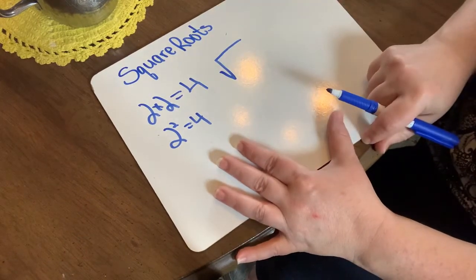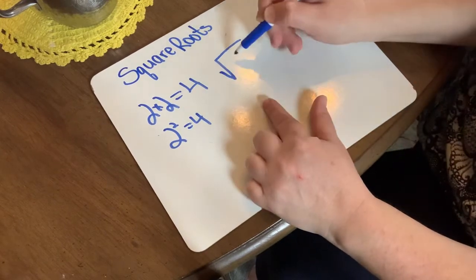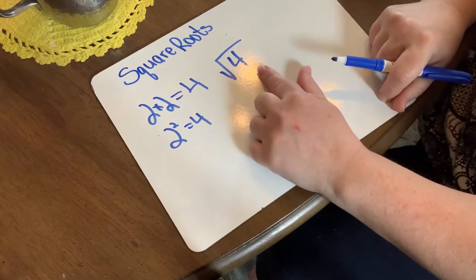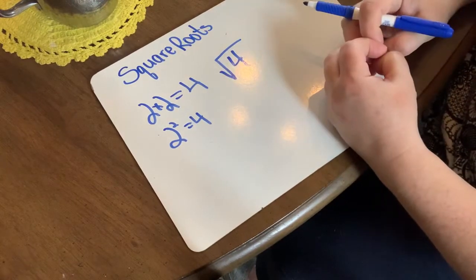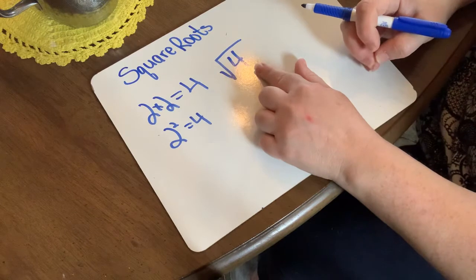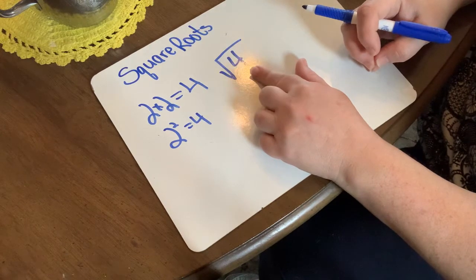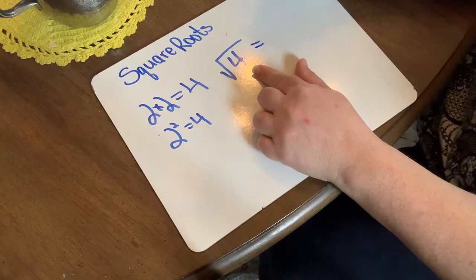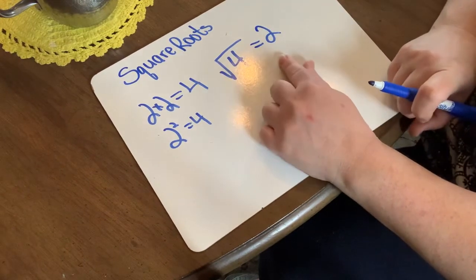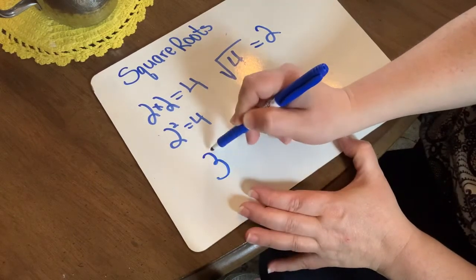Now I want to work backwards. My root sign looks like a division sign with a check mark in front of it. I want to find the square root of 4. A square root is two factors that are the same number, and I know that two factors that are the same number when multiplied together is 2 times 2, so the square root of 4 is 2.